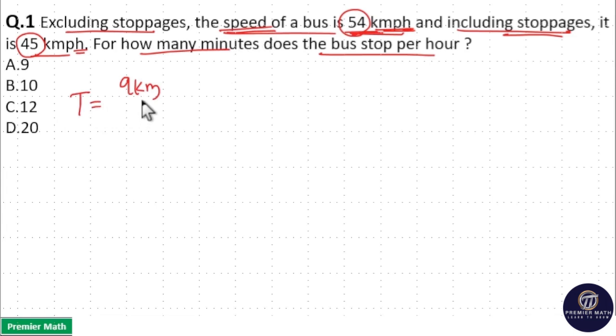So time taken for this higher speed bus to cover this extra 9 kilometers equals 9 divided by 54, which is equal to 1 by 6 hour. So this is 1 by 6 into 60, that is 10 minutes.